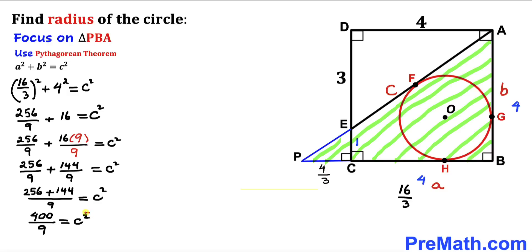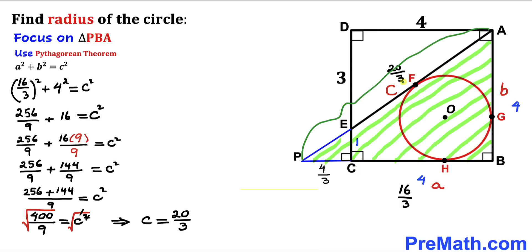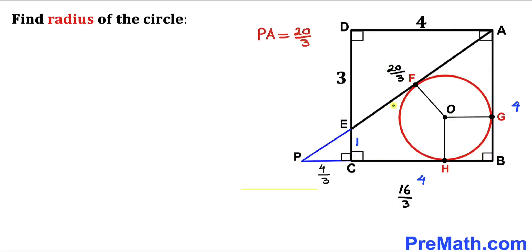Taking the square root of both sides, the square and square root undo each other. So c equals the square root of 400 divided by the square root of 9, which is 20 divided by 3. Therefore side length PA turns out to be 20/3.